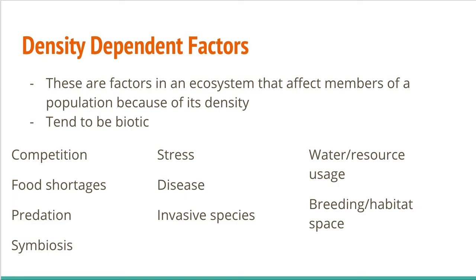Disease is an absolutely huge density dependent factor and probably one of the biggest ones, because as you get denser populations disease crops up way more frequently. We can still see this in human populations even though we have medicine that is very good at breaking chains of transmission and treating diseases — they absolutely crop up more often in densely packed areas than dispersed areas. Invasive species depends on the density of the invasive species, and water and resource usage will be faster in denser areas as well as the usage of breeding and habitat space.